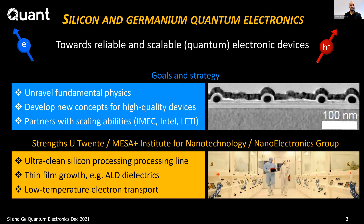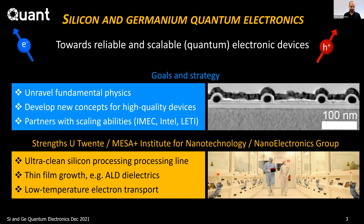In Twente, we're in the nano electronics group, part of the MESA+ Institute for Nanotechnology. We have our own nano lab and clean room facilities with an ultra-clean silicon processing line — gold is strictly forbidden and III-V materials can't easily enter. We also have great expertise in thin film growth, including high-quality atomic layer deposition dielectrics. Our group is expert in low-temperature electron transport — that's the expertise background I share with the host.